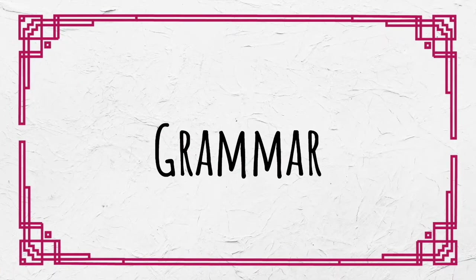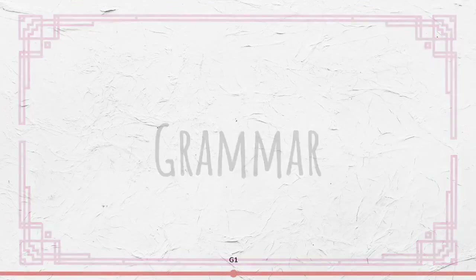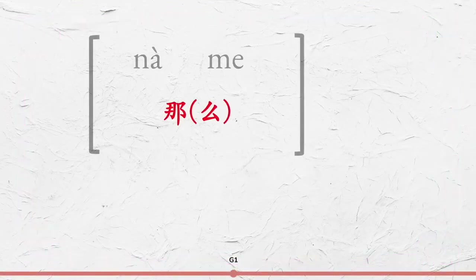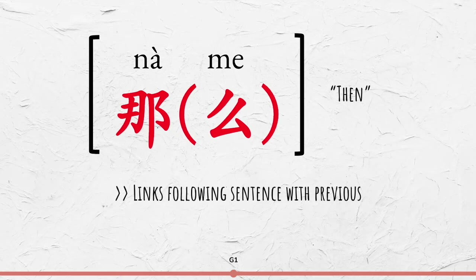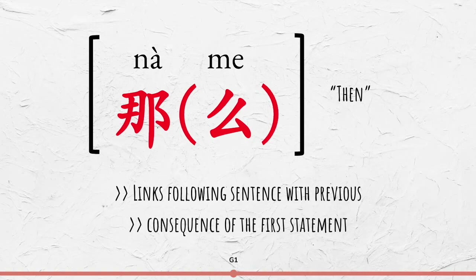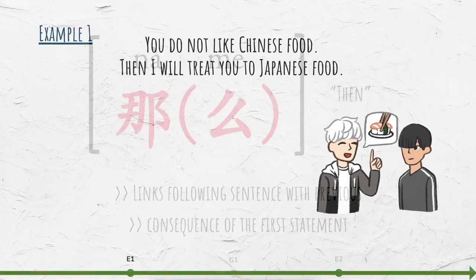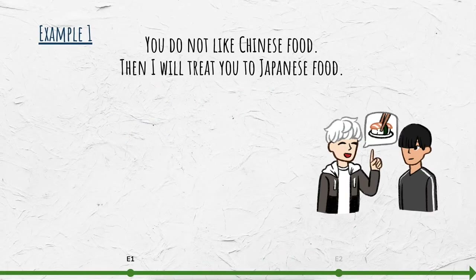Now let's move on to the grammar. 那么, which is sometimes shortened to 那, means 'then' and links the following sentence with the previous statement as a consequence of the first statement. For example: you do not like Chinese food, then I will treat you to Japanese food.